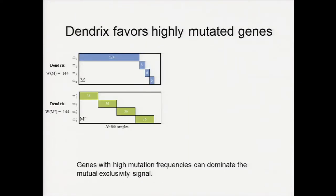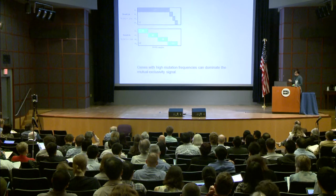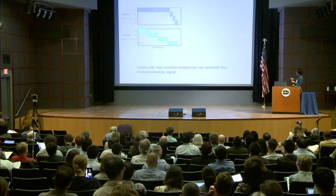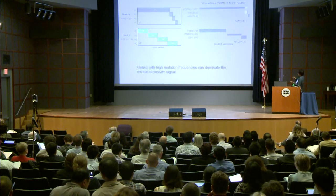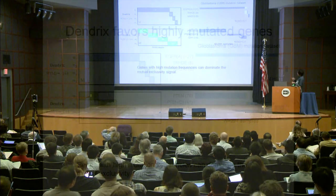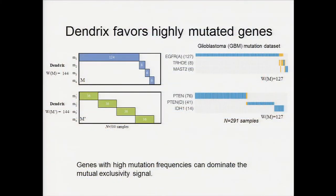One limitation in the Dendrix weight function is that we found it tends to favor highly mutated genes. Here I give two examples: two mutation matrices that have the same coverage and perfect exclusivity, yet Dendrix cannot distinguish them. Even when the mutual exclusive signal is dominated by a highly mutated gene, if you run Dendrix on real cancer data like glioblastoma, you'll find a gene set with highly mutated gene EGFR and some random genes that reports the same score as a well-known cancer gene set.